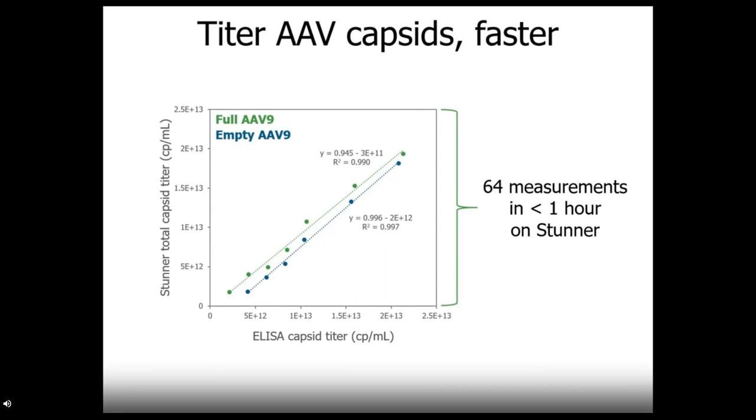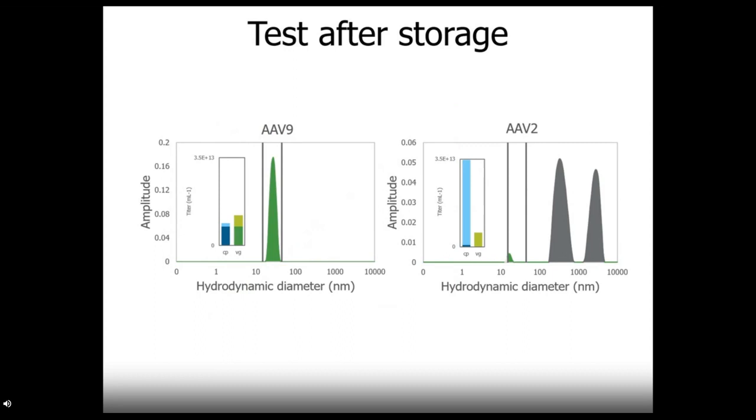Now, for getting capsid titer, Stunner is way faster and requires less upfront work than ELISAs. Here we've taken full or empty AAV9 and ran a dilution series where we've compared Stunner's total capsid titer metric against the result for a capsid ELISA. The results have slopes close to one and R squared values above 0.99. And importantly, it would take hours to get this ELISA data, while Stunner has done it in less than an hour with no sample prep.